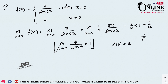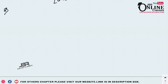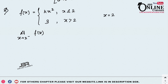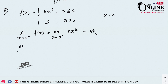Sum 8: f(x) = kx² when x ≤ 2, and 3 when x > 2. Find k so that f is continuous at x = 2. For the left-hand limit, as x → 2⁻, the function is kx², so the limit equals k · 4 = 4k.